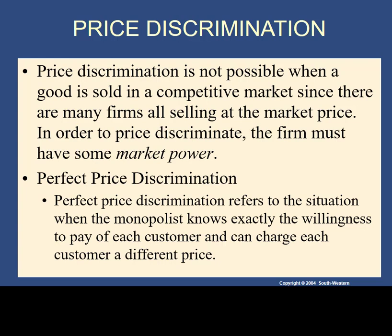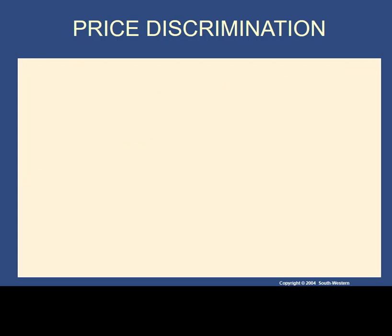If the monopolist can do this, they can continue to charge a different price to attract more and more customers without ever losing any money on prior sales. There is a caveat: in order for perfect price discrimination to work, it must not be possible for prior customers to resell the product. Given that condition, the monopolist can extract more and more revenue.